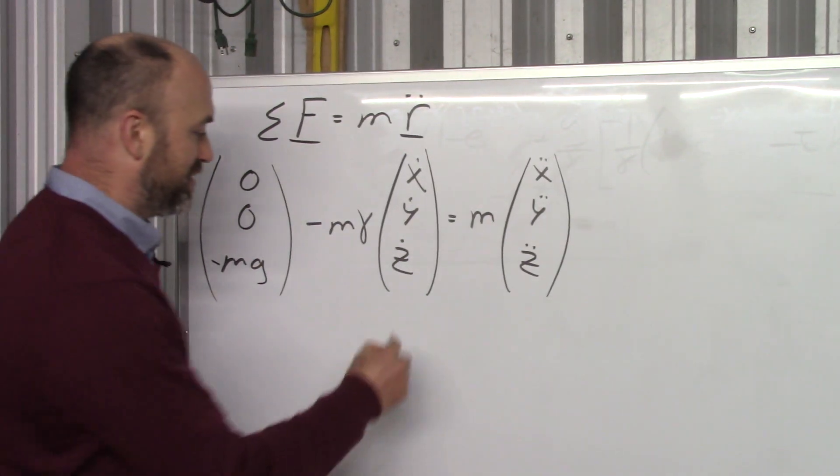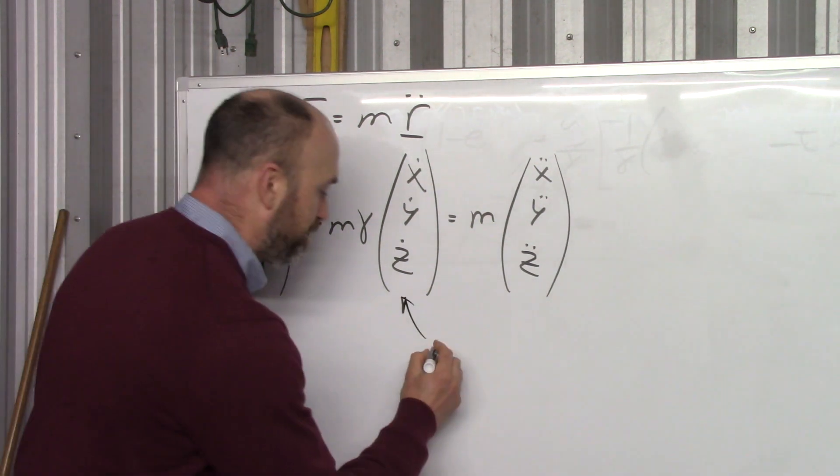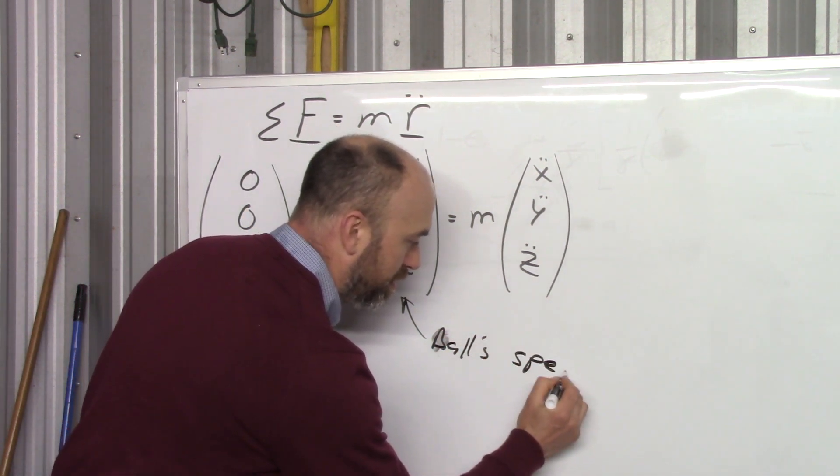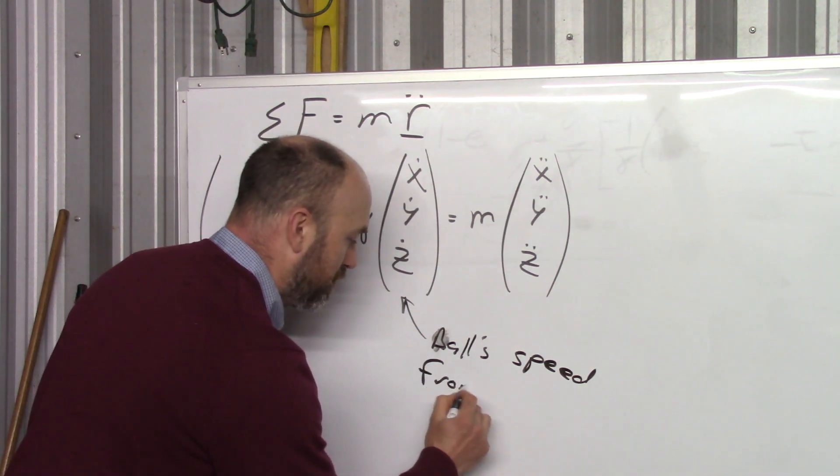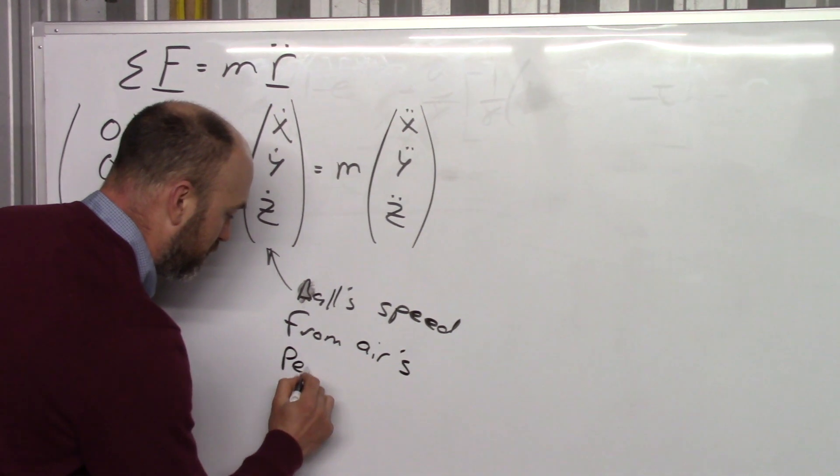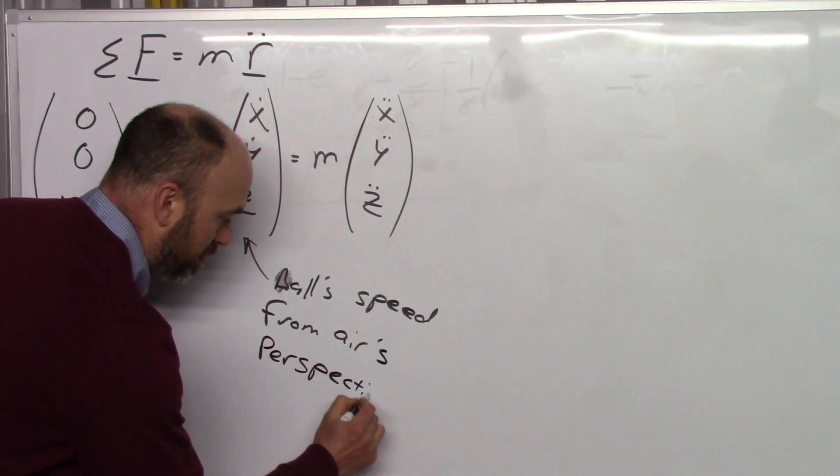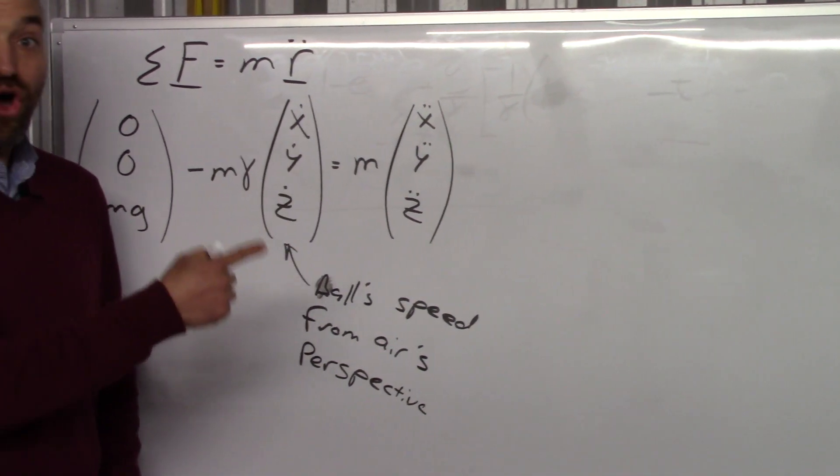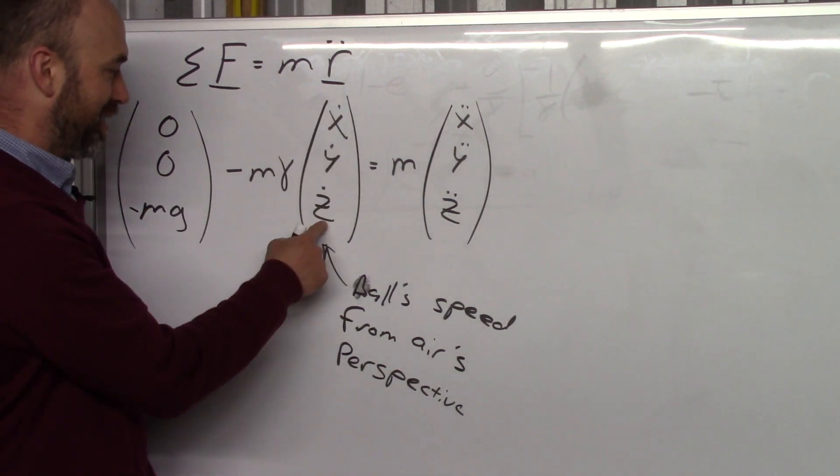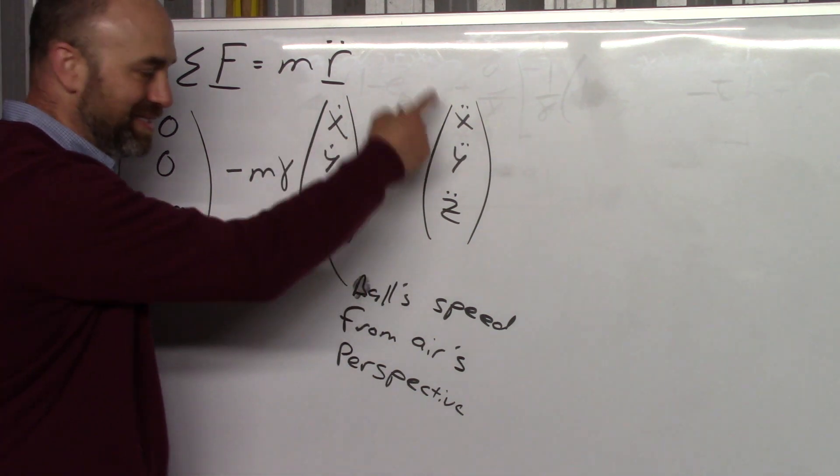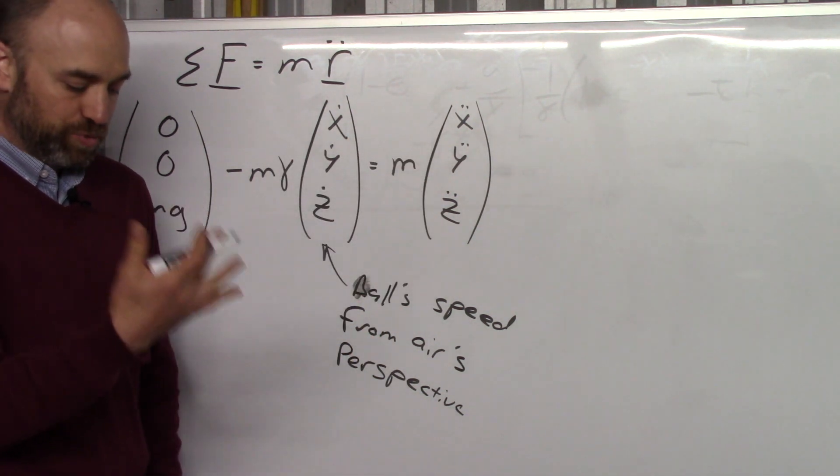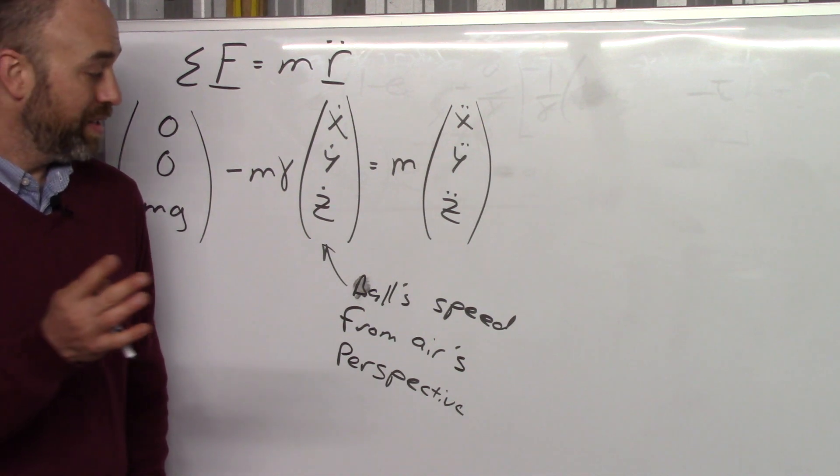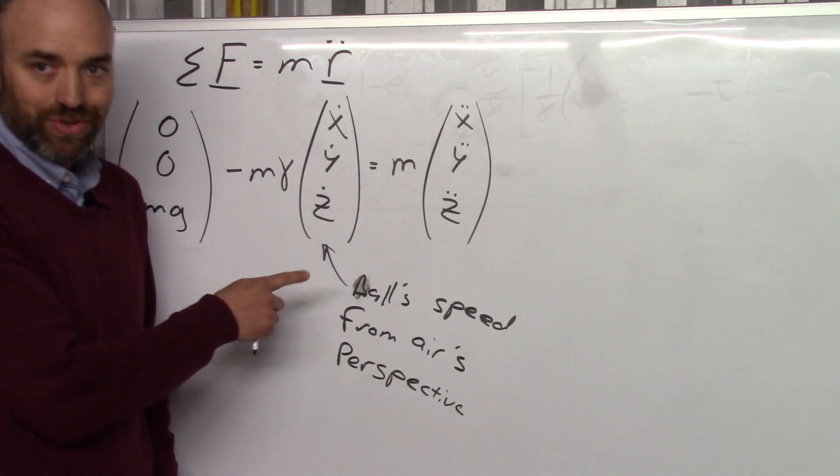So what this is, these speeds are, are the ball's speed from the wind's, and I'll say air's perspective. And if there's no wind at all, it is ground speed also. So notice these x's and these x's, these speeds and accelerations are all from the perspective of ground. But as soon as you introduce wind, that speed from the air's perspective changes. So we have to take that into account.